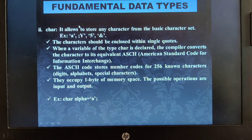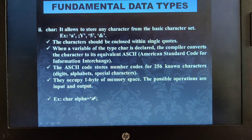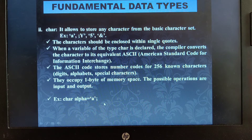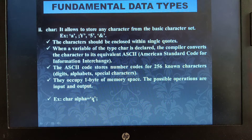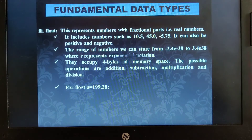You cannot perform typical mathematical functions on character data types; however, if you do add characters, the compiler uses their ASCII values. For example, adding 'a' and 'b' means adding 97 and 98 to get 195. So the operations on character data type are mainly input and output. To declare: specify the data type, followed by the variable, then the character enclosed in single quotes.